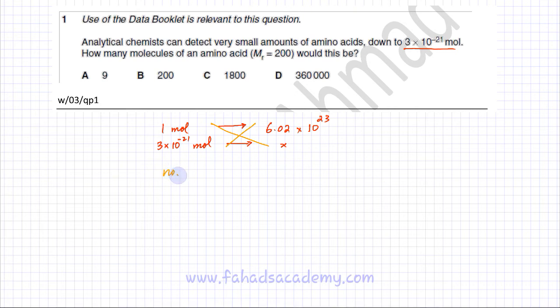The number of particles of amino acid - you can either use ratios, the unitary method, or the formula. Number of particles would be equal to the moles of the particles, 3 × 10^-21 moles, multiplied by Avogadro's number, which is 6.02 × 10^23.